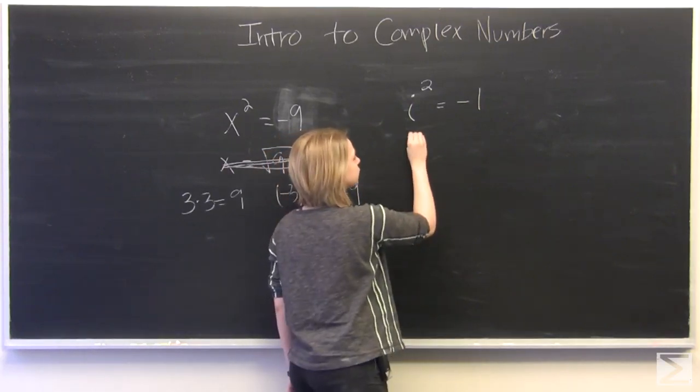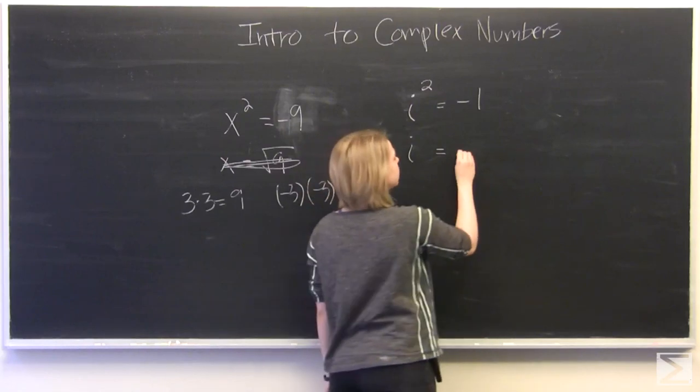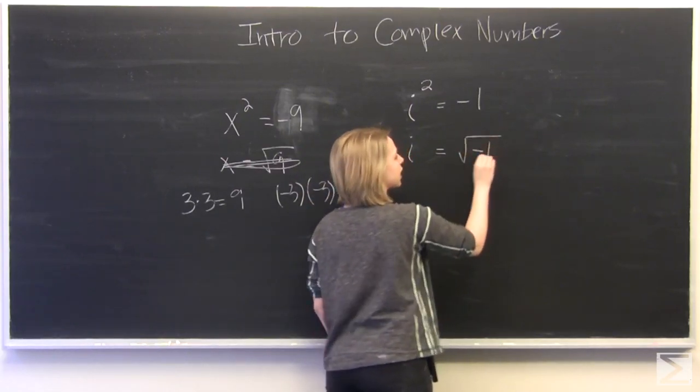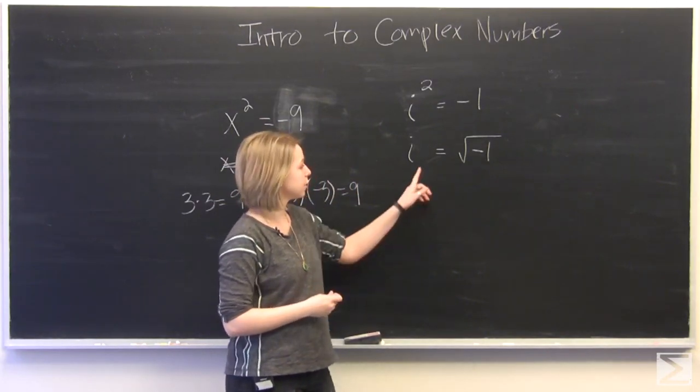Which means that the square root of i squared is equal to the square root of negative 1. So the primary root of the square root of negative 1 is equal to i.